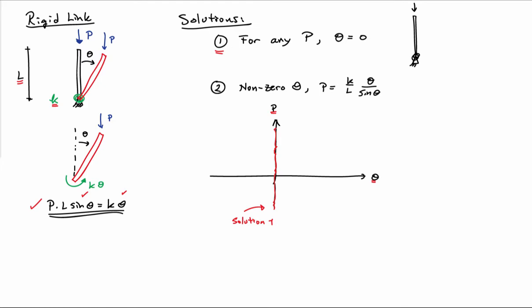If I plot solution two, I'm going to find a very shallow, slightly upwardly curved solution path here, which I've labeled solution two, and its intercept with the P axis happens at K over L. So here are my two solutions. This is sometimes known as a bifurcation diagram.